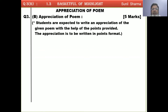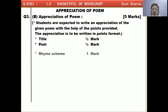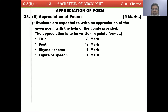This question 3B says: given the poem, write the appreciation with the help of the points provided, in points format. The points we have to write are: the first point is the rhyme scheme for one mark, the fourth point is the figure of speech for one mark, and the last point is the theme and the central idea for 2 marks. This is the pattern of the poetry appreciation question.